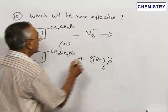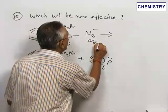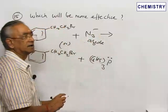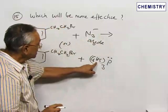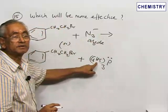Azide ion, this N3 minus ion is known as azide. Azide ion is a weak nucleophile and triphenyl phosphine is a stronger nucleophile.